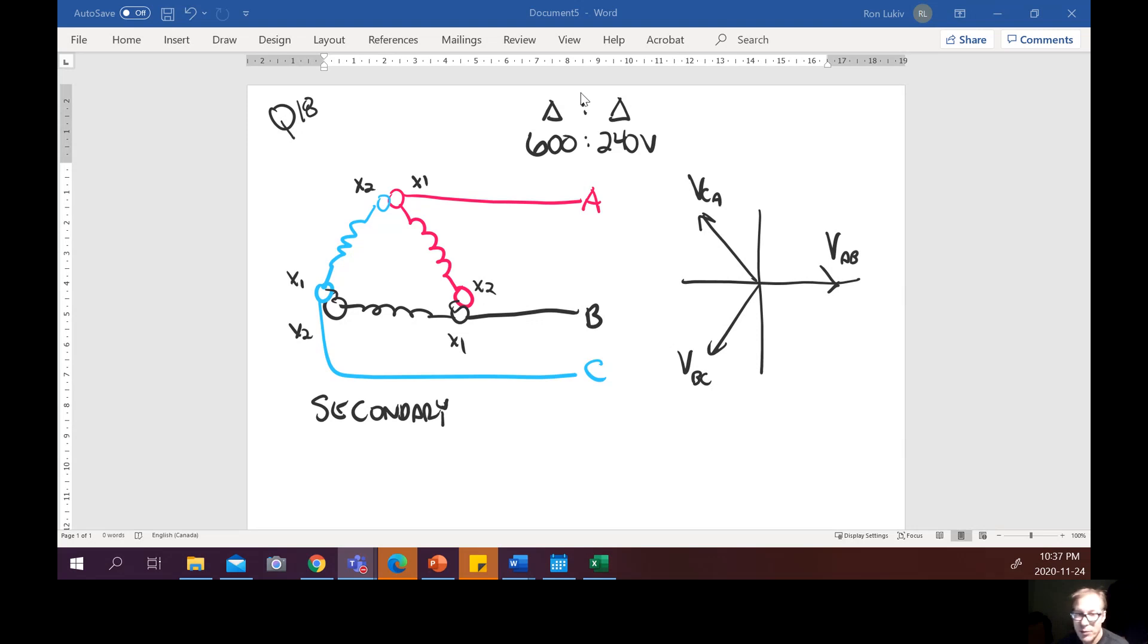Now we're going to assume that the primary is hooked up properly so we don't have to worry about that and we have a secondary of 240 volts so that means each winding, this winding here would be 240 volts and the B winding would be all the same. So we're all good with that and we should know by now that it's x1 to x2, x1 to x2.